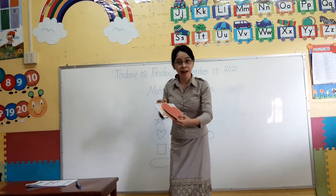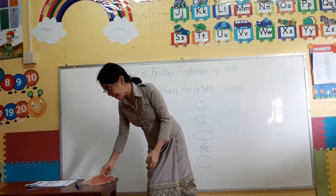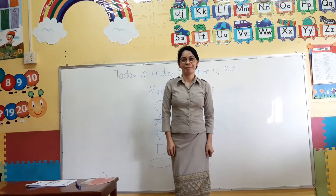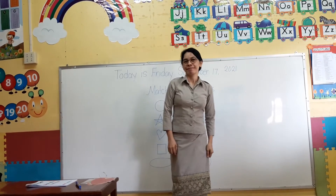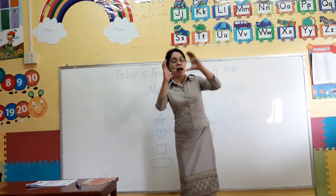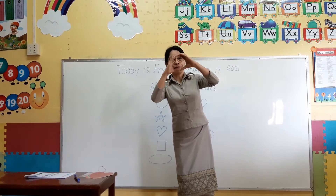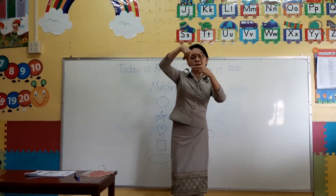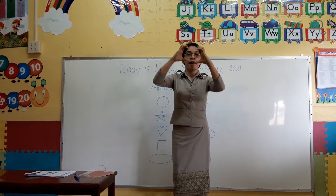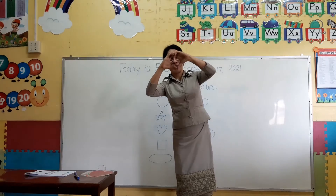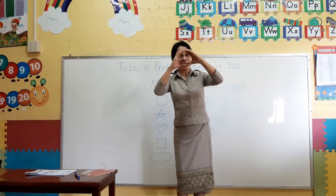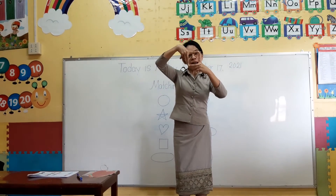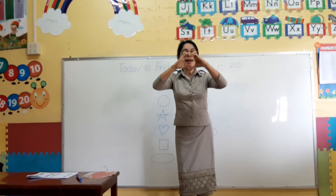Let's sing the shape song. Okay, are you ready? Do it like this: a circle, a triangle, a square, a heart. A circle, a triangle, a square, a heart.